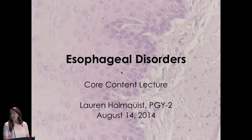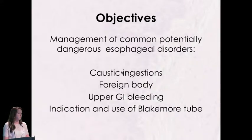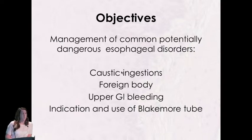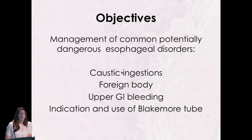I'm going to be talking about the esophagus. There's so much that can go wrong with it, but I'm going to cover just a few things. I want to talk about caustic ingestions, foreign bodies — which you'll see every day at Children's — upper GI bleeding, and the indication and use of a Blakemore tube. I actually have a Blakemore tube and I hope we have time to play with it.